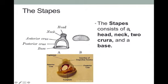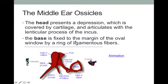The stapes is the smallest bone in the human body. It consists of a head, a neck, and two crura that attach to an oval-shaped base. This base fits snugly into the oval window, which is of the same shape. The head of the stapes has a depression, and that is what connects to the lenticular process of the incus.